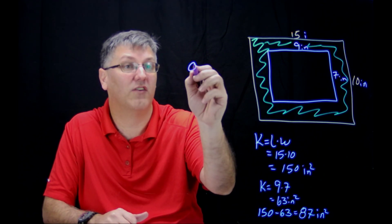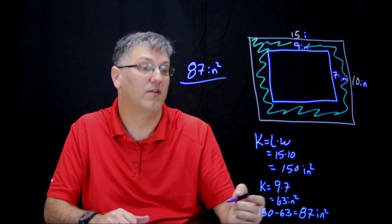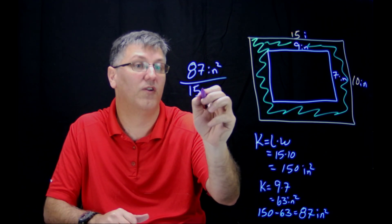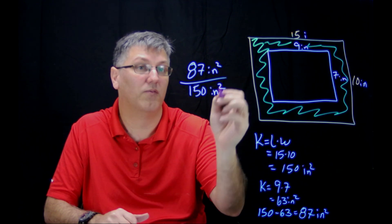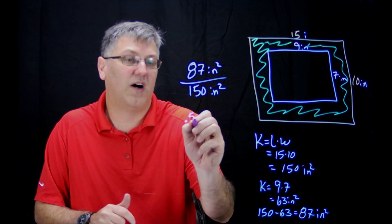I want to do my 87 inches squared, divided by my overall 150 inches squared. And you just go throw it in the calculator. And when you throw it in the calculator, we're going to get 0.58.